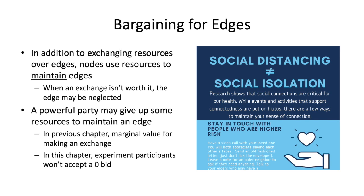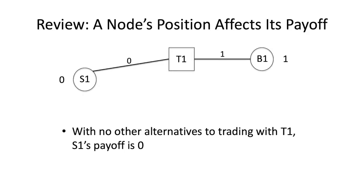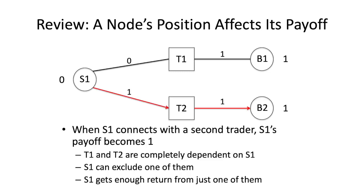Now for a review of the trader-intermediary network, focusing on the supplier. A node's position affects its payoff. Trader 1 has a monopoly on Supplier 1, and because there are no alternatives, S1 has to accept zero extra amount. When we add a second trader, there's competition, and S1 can now bargain. T1 and T2 are completely dependent on Supplier 1, so S1 can exclude one of them and still get enough return from just having one. T1 and T2 have to bid one to S1 because they are completely dependent on them.